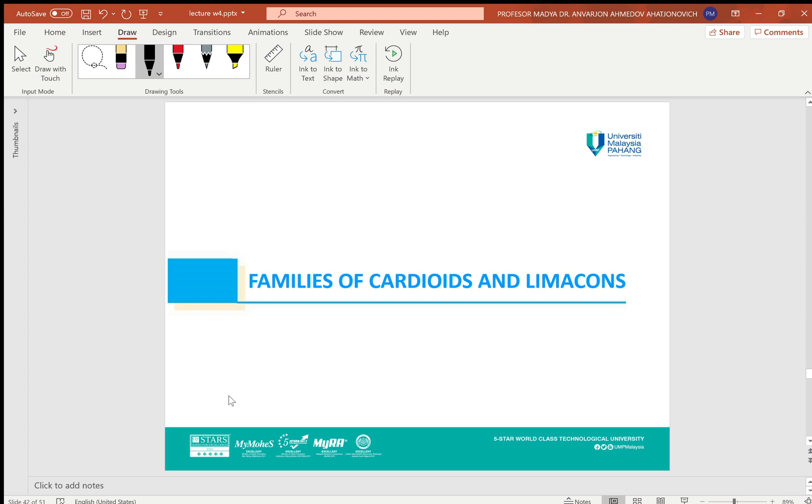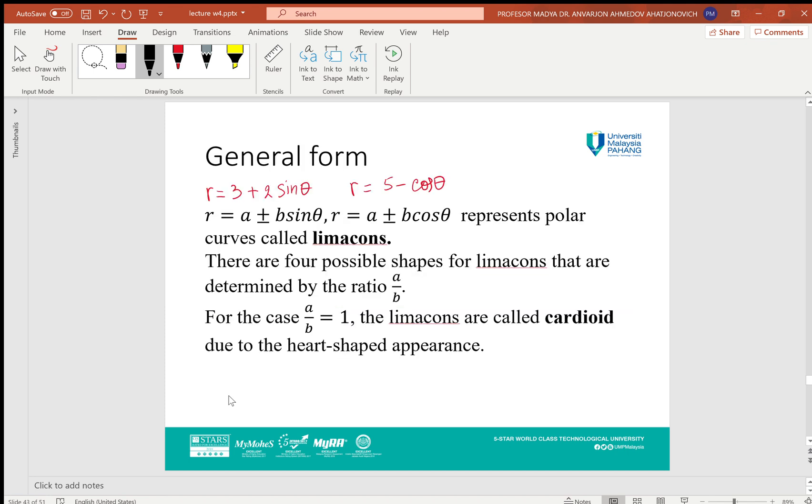Families of cardioids and limacons. The general form equations R = a ± b sin θ and R = a ± b cos θ represent polar curves called limacons.